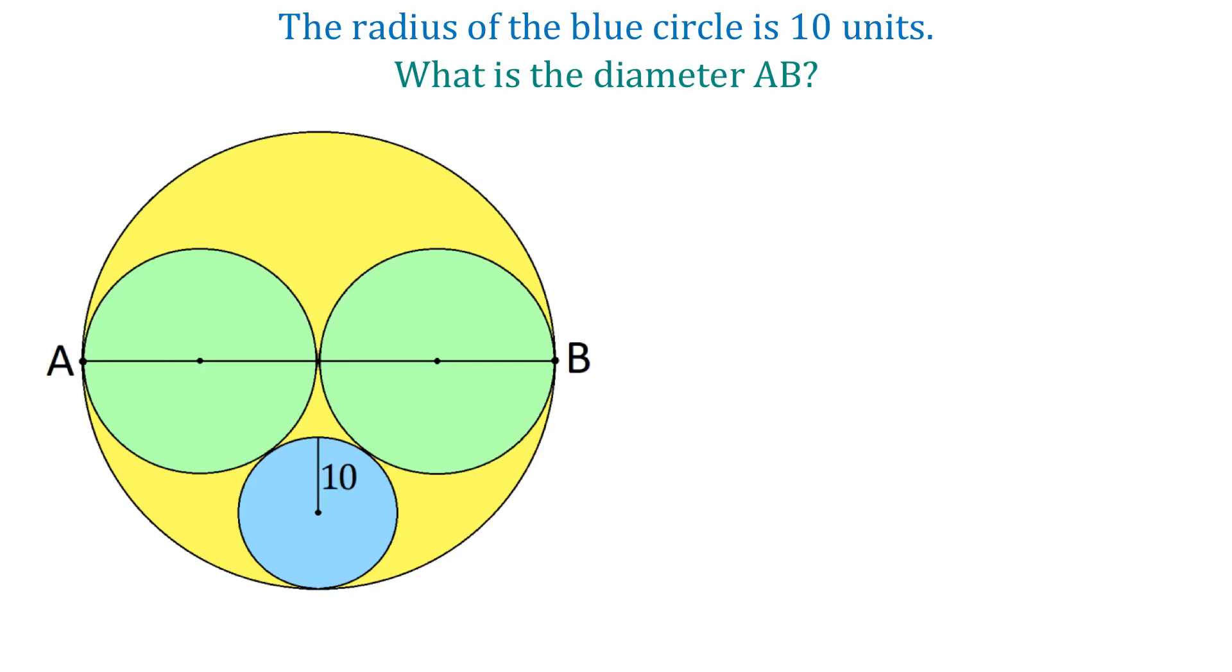Hello, in this figure we have a yellow circle with the diameter AB. Inside this circle we have two equal green circles and a blue circle. If the radius of the blue circle is 10 units, then what is the diameter of the yellow circle?